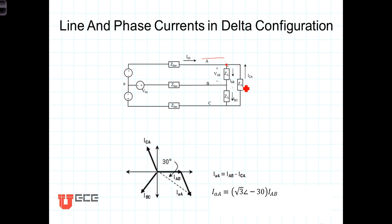And as we mentioned before, the set I sub AB, I sub BC, and I sub CA, those three currents constitute a balanced set. And what we want to do now is determine the relationship between the line current and the phase currents in each of these different phases.